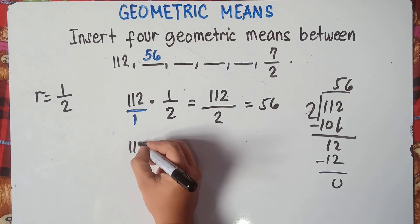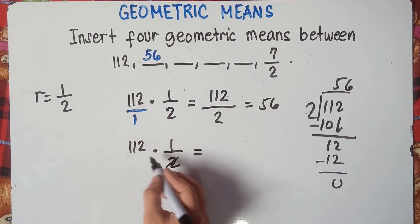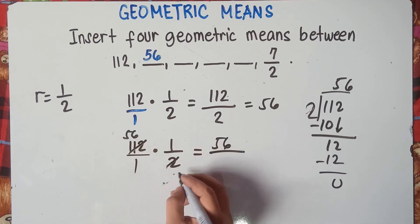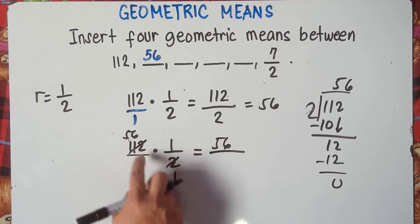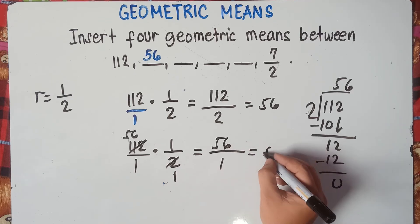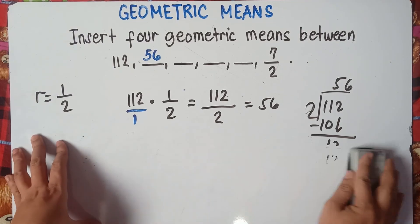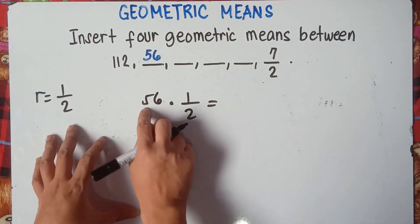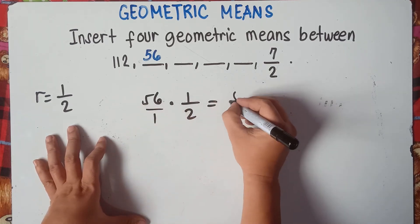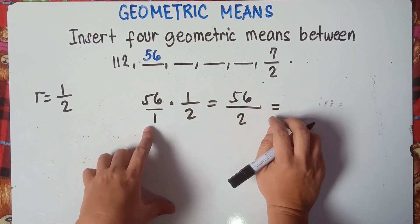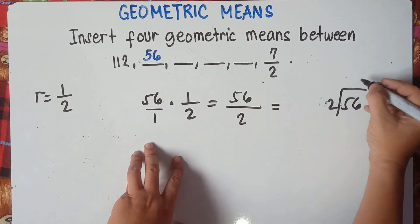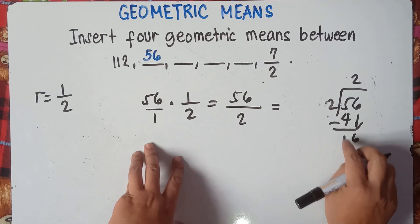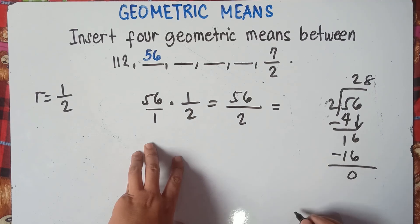Next: 56 times 1 half. Multiply the numerator: 56 times 1 is 56, then divide by 2. 56 divided by 2 is 28. So the second geometric mean is 28.